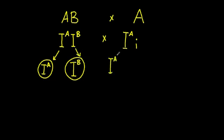The gametes produced from this: the father can only produce IA and IB, and the mother can only produce IA and lowercase i.